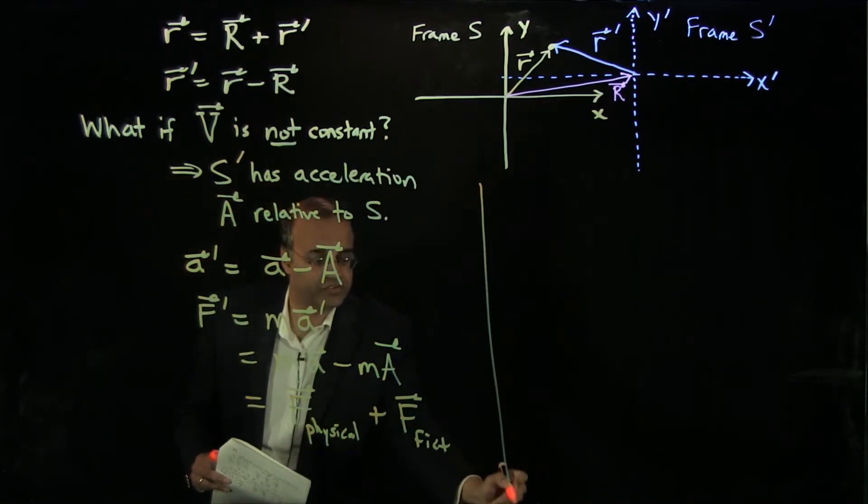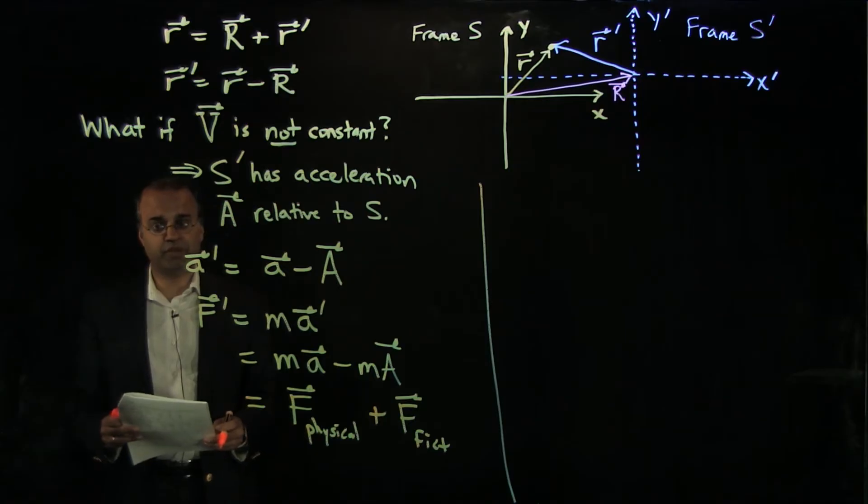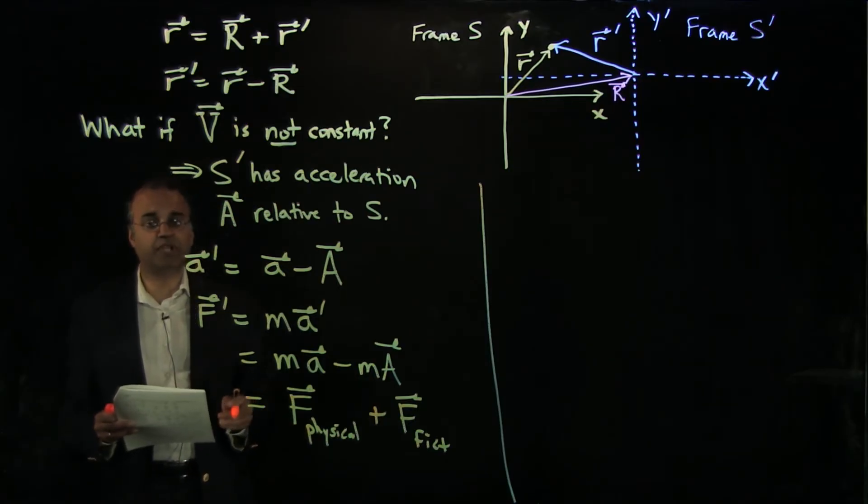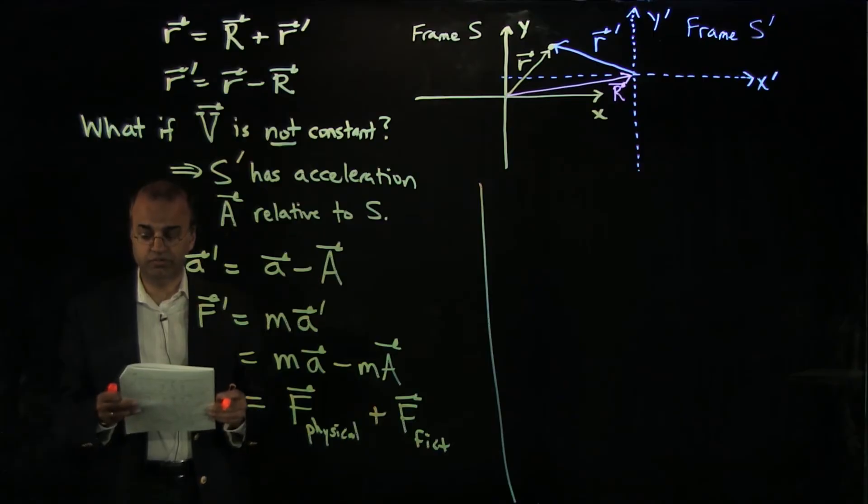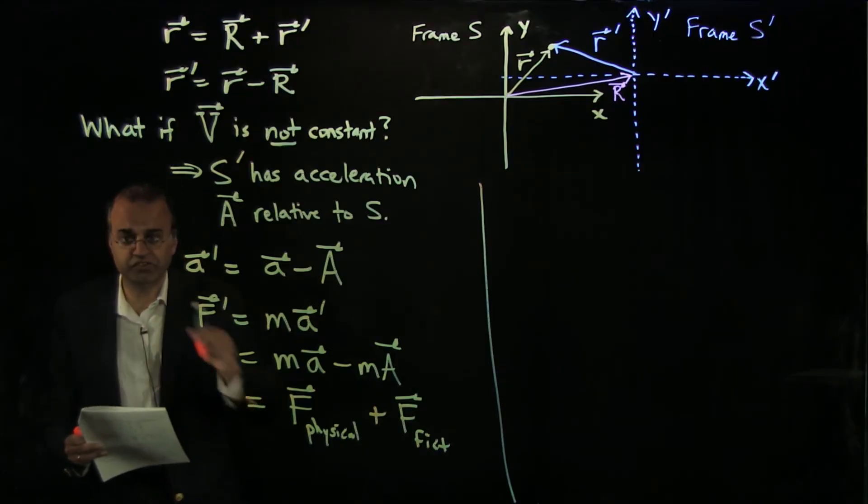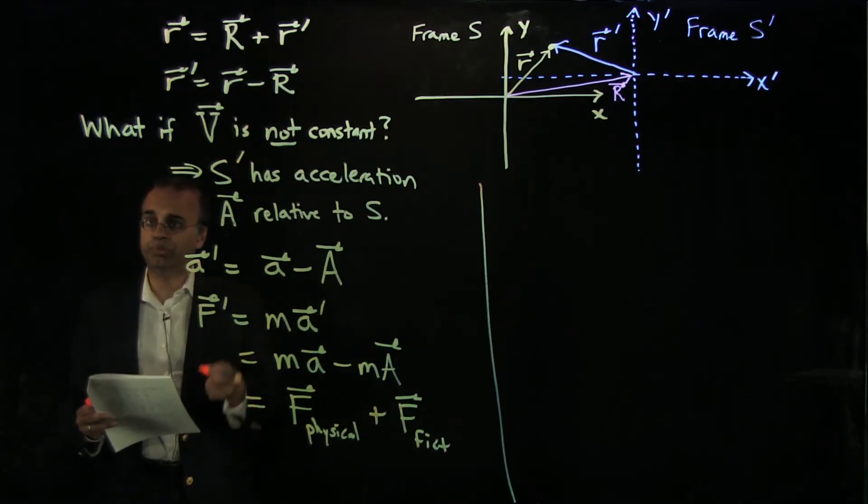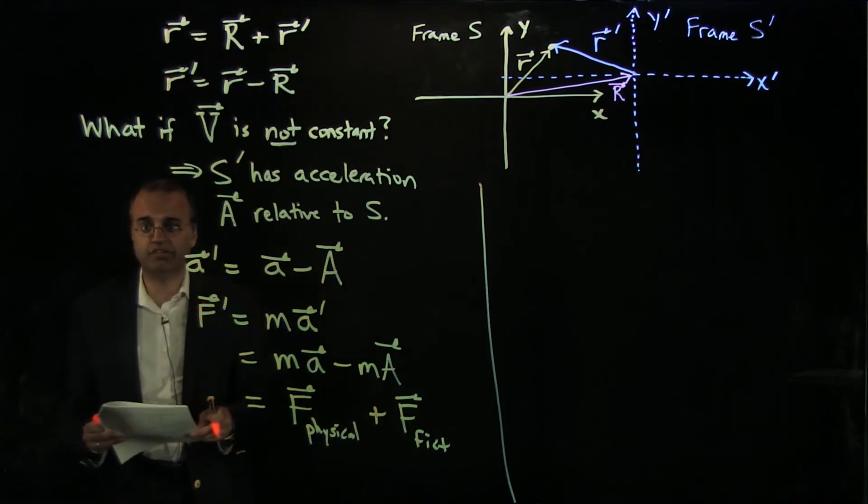So what this means is that an observer in frame S prime, in order to explain the motion of the object using Newton's laws, will have to invoke not just the physical forces that are acting on the object, which might be due to gravity, or rope pulling, or an engine pushing, or a hand acting on something.